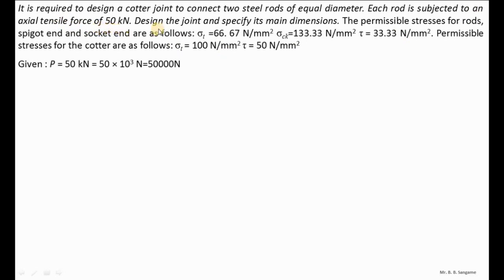Design the cotter joint and specify its main dimensions. The permissible stresses for rods, spigot end, and socket end are: sigma_T (permissible stress in tension) = 66.67 N/mm², sigma_CK (permissible crushing stress) = 133.33 N/mm², and tau (permissible shear stress) = 33.33 N/mm².